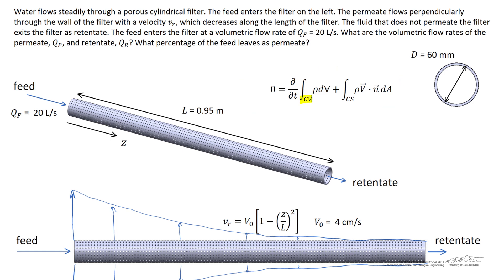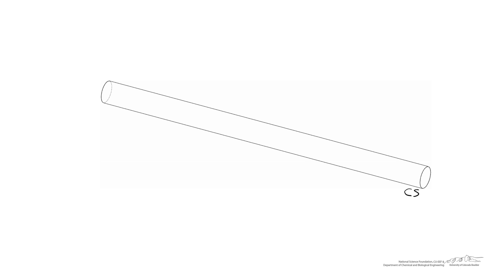To work with this equation, we first have to define the control volume and the control surface. For this problem, let's define the control surface as being the outer face of the filter. When we look at it on its own, the control surface is just going to be a cylinder. So the control surface is the surface of the cylinder, and the control volume is the volume within the cylinder. We also need to define outward facing unit normals. On the left side of the control surface, the outward facing unit normals point in this direction. On the right hand side, the outward facing unit normals point in this direction. And on the third surface, the outward facing unit normals point radially outward from any location of our control surface.